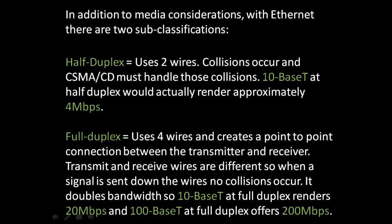The second is full-duplex, which uses four wires and creates a point-to-point connection between the transmitter and receiver. Transmit and receive wires are different, so when a signal is sent down the wires, no collisions occur. It doubles bandwidth, so 10Base-T at full-duplex renders 20 megabits per second, and 100Base-T at full-duplex offers 200 megabits per second.